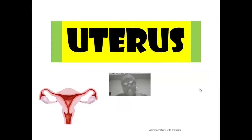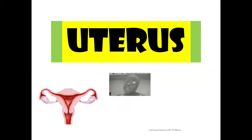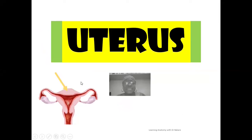Welcome to my channel. Let's look at the uterus. The uterus is the secondary female reproductive organ, and this organ creates the accommodation site for implantation. Looking at the image, this is where we have the uterus, and if you look at the uterus at its lateral end, we have the emergence of the uterine tubes.